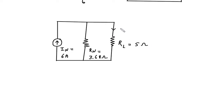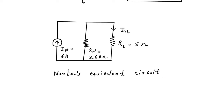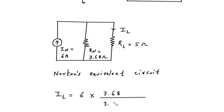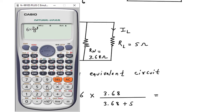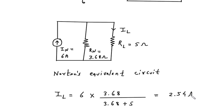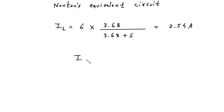Now we have to find the current through this 5 ohm resistor, which will be IL. This is Norton's equivalent circuit. Using the current division rule, IL equals In multiplied by the opposite branch resistance divided by the total resistance. So IL equals 6 multiplied by 3.68 divided by 3.68 plus 5, which gives 2.54 ampere. Therefore IL is equal to 2.54 ampere.